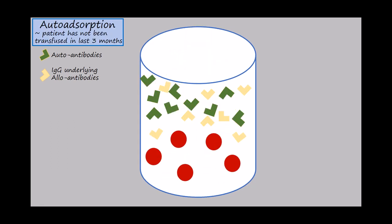Now, if you're going to be performing an autoabsorption, this is when you'll be looking at patient history and saying, okay, my patient has not been transfused in the last three months, so therefore I can incubate my patient's red cells with their own serum. That's what the term autoabsorption means.